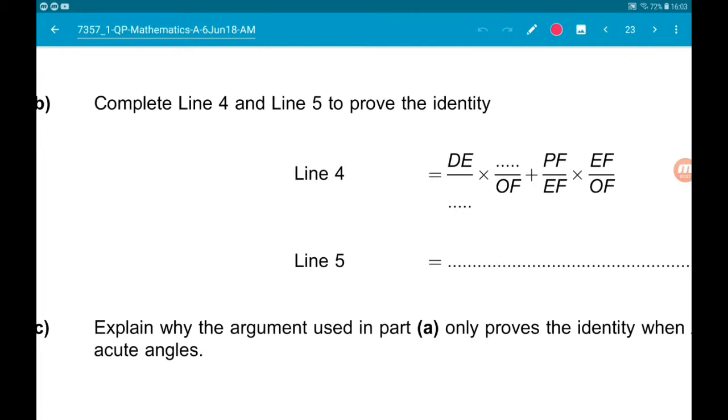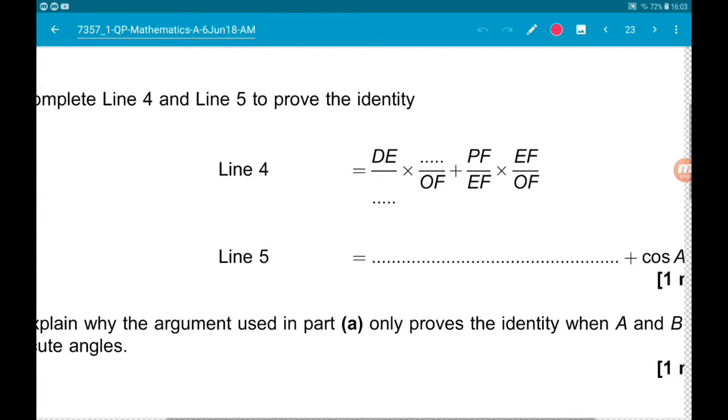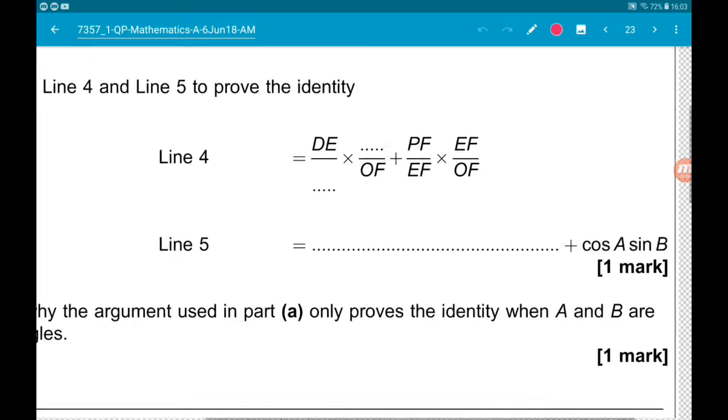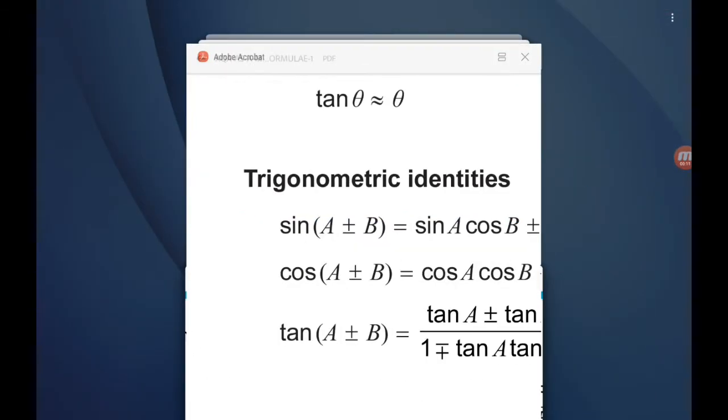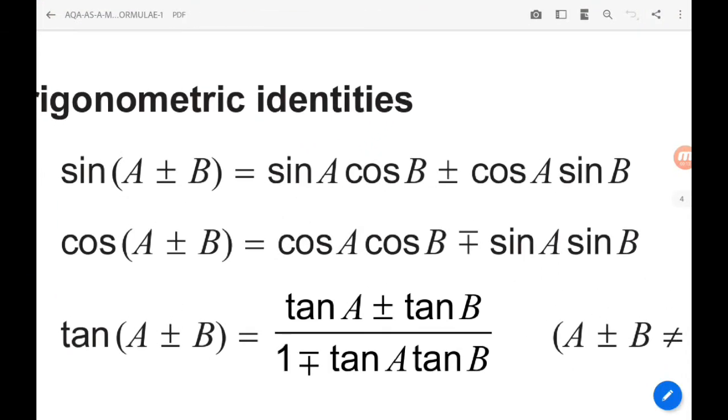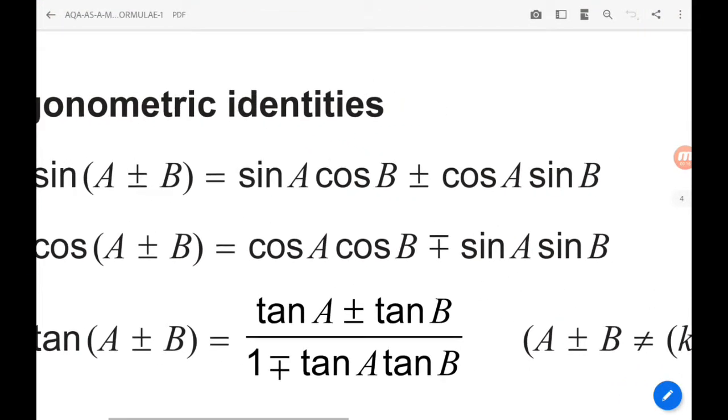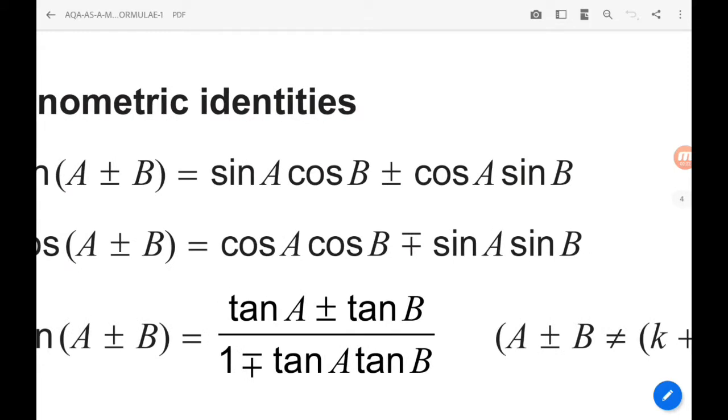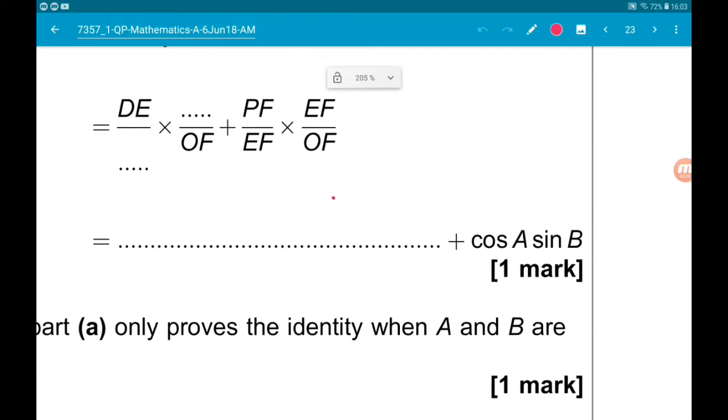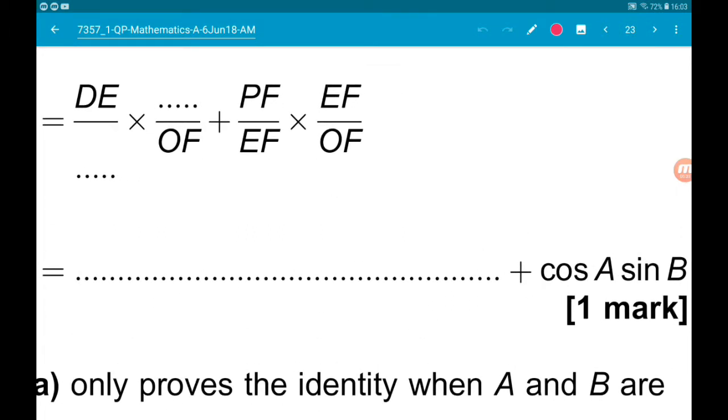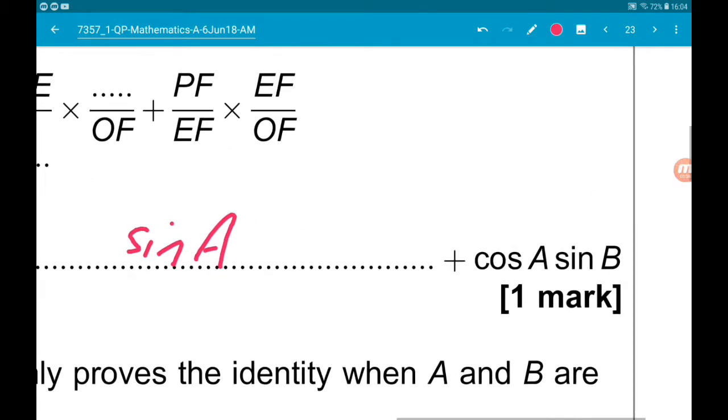Then part B wants us to complete line 4 and line 5 to complete the identity. So we're given the identities in the formula book. So we want sin of A plus B. So we know it needs to be sin A cos B plus cos A sin B. What we need on this side is sin A cos B.